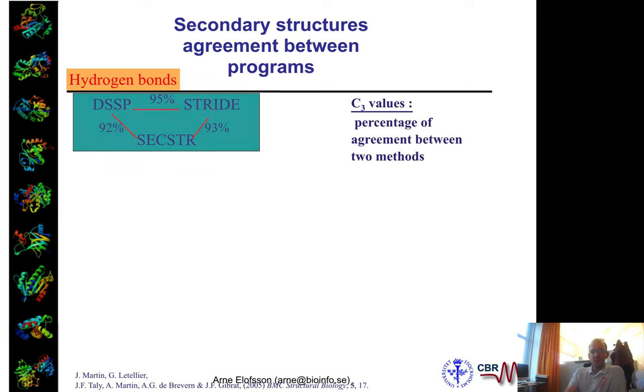And actually, if you look at the agreement between them, DSSP and STRIDE and the secondary structure assignment, which is basically classification from manual annotation in PDB, they agree about 92, 93, 95 percent, but not more than that.